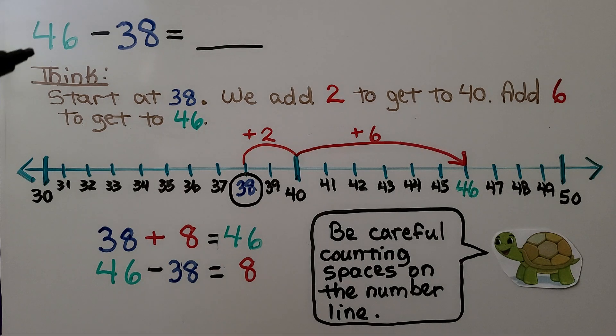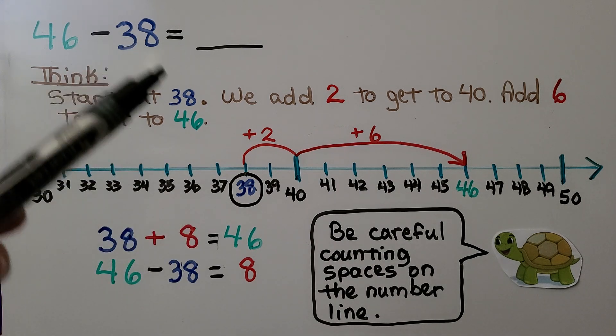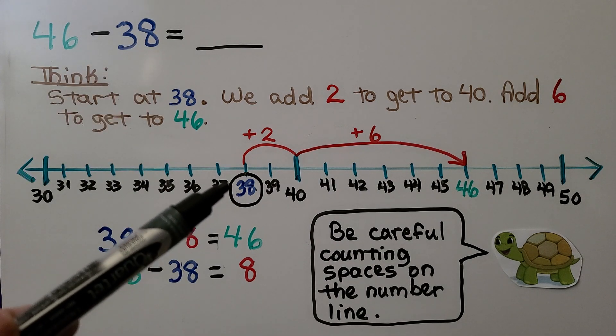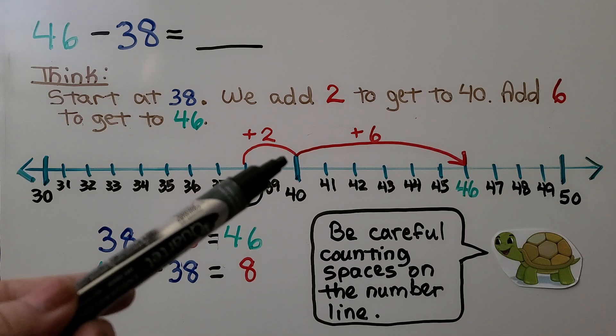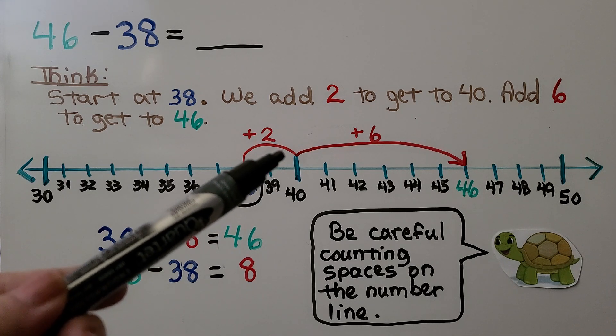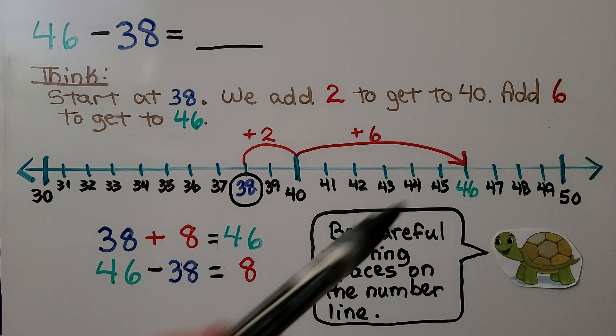Here we have 46 minus 38. So we think, to do mental math, we start at the 38, the subtrahend. We add 2 to get to 40, the next tens number. Then we need to add 6 more to get to 46.